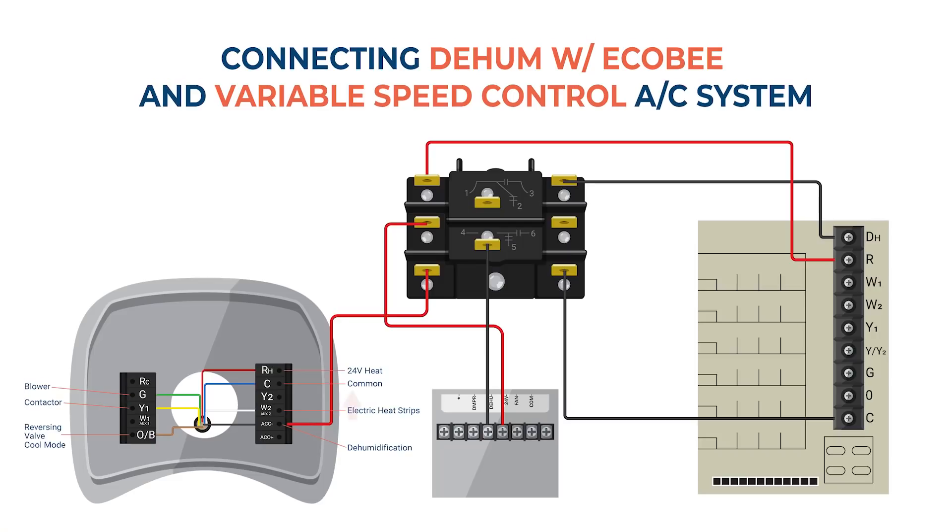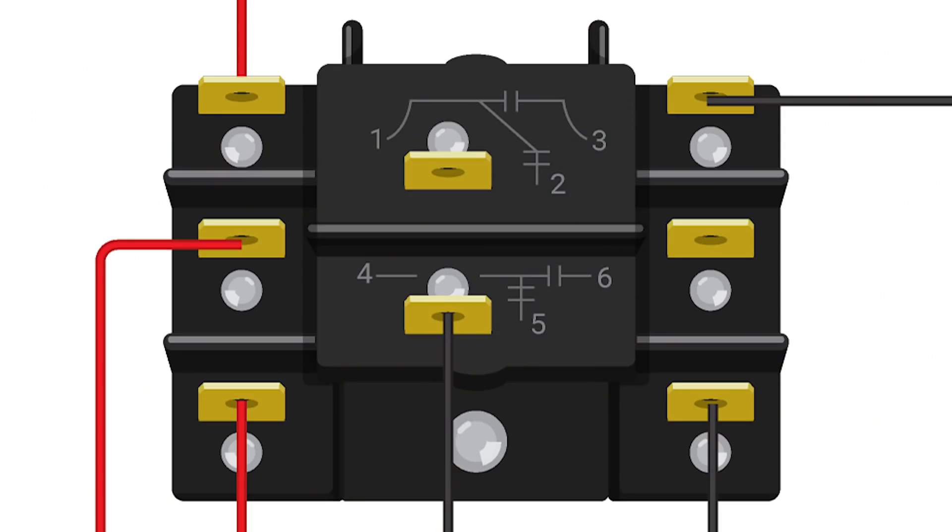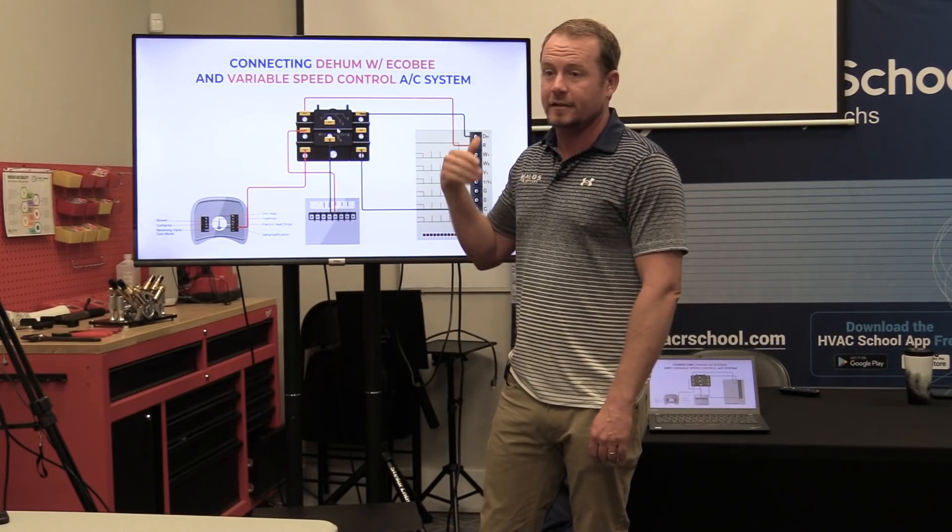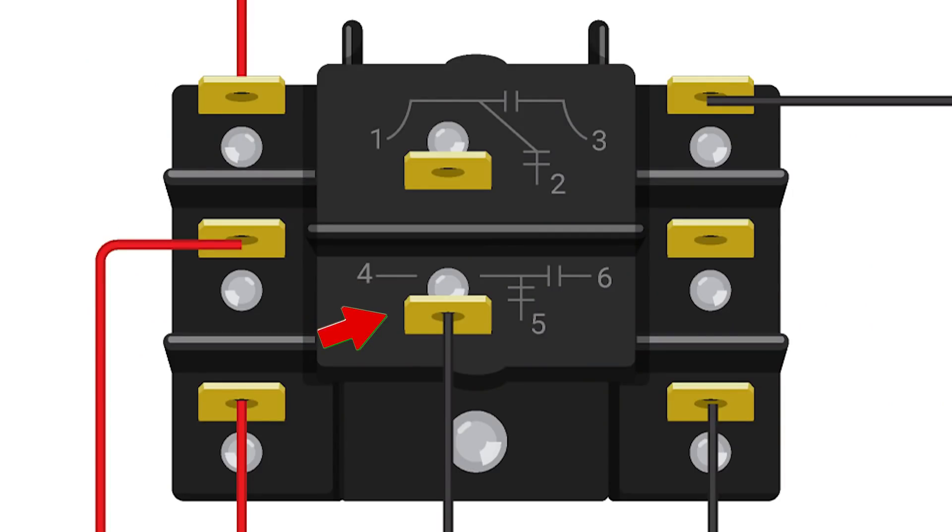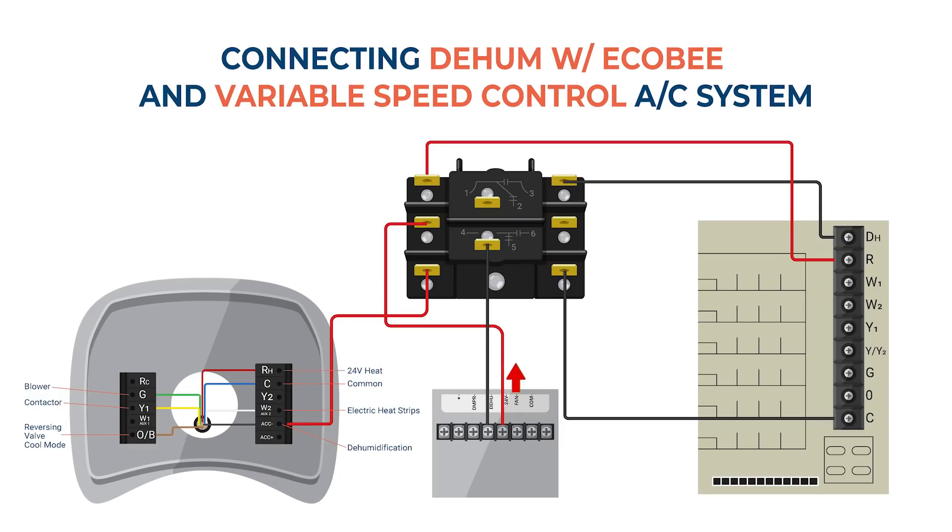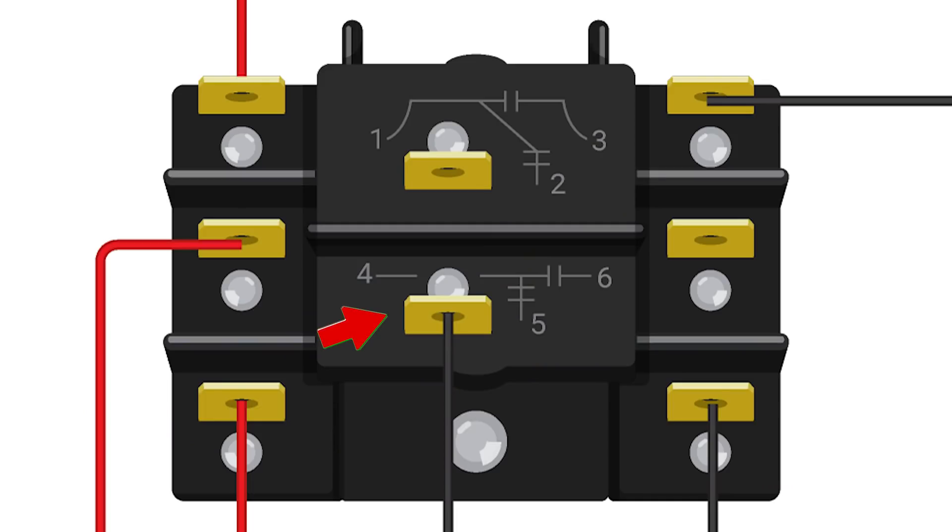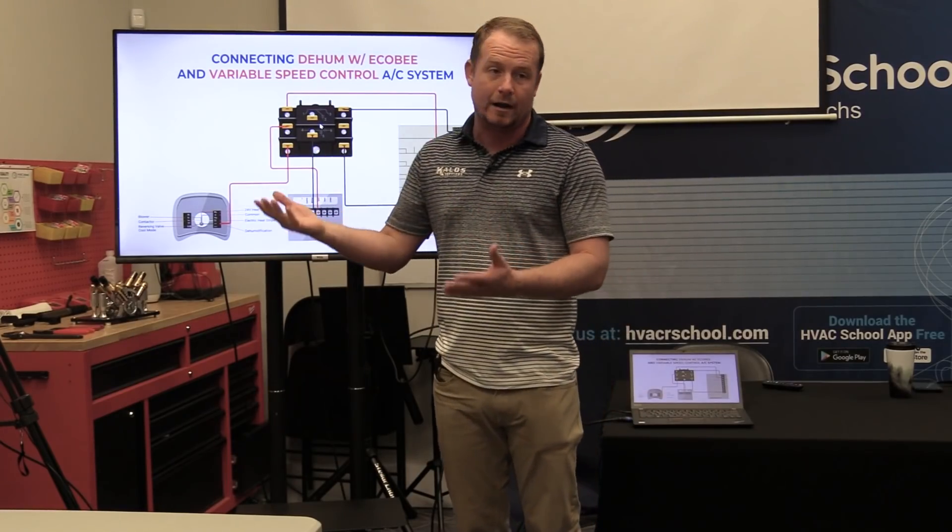So the way this is wired, when this thermostat says we do not want to dehumidify, now it energizes like it normally would. It energizes this coil, this 24 volt coil, it pulls in the contacts. These go closed because they're normally open, it energizes, these go closed, you energize DH, which keeps it in full speed. You energize for full speed. And now these, because these were normally closed - this is 24 volts from the dehumidifier transformer back to dehumidify call on the dehumidifier. Then these that were normally closed now go open in order to not run the dehumidifier.